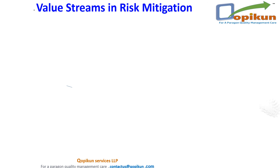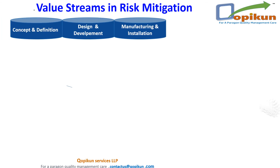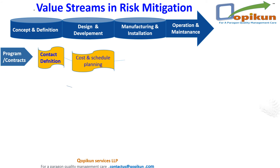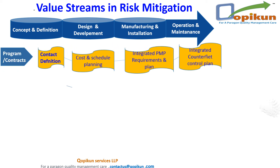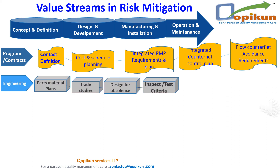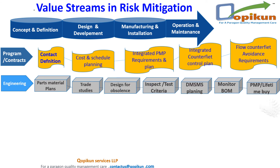Value streams in risk mitigation: 1 — concept and definition; 2 — design and development; 3 — manufacturing and installation; 4 — operation and maintenance. Under program or contracts, we undergo many processes: 0.1 contract definition, 0.2 cost and schedule planning, 0.3 integrated PMP requirements and plan, 0.4 integrated counterfeit control plan, 0.5 flow counterfeit avoidance requirements. Engineering: 0.3 parts/material plans, 0.2 trade studies, 0.3 design for obsolescence, 0.4 inspector/test criteria, 0.5 DMSMS planning, 0.6 monitor BOM, 0.7 PMP or lifetime buy.